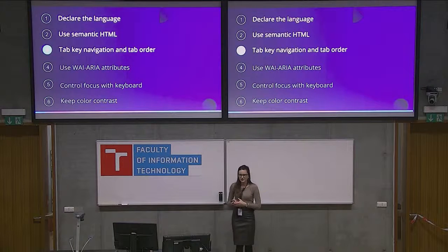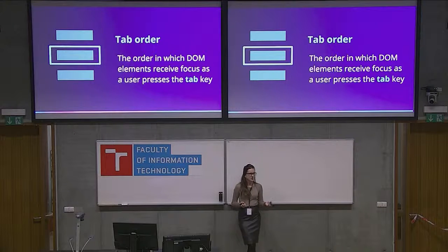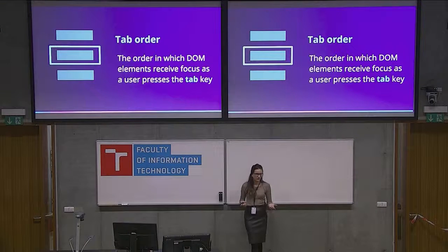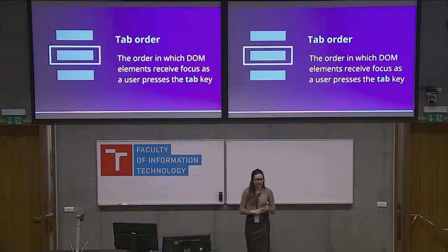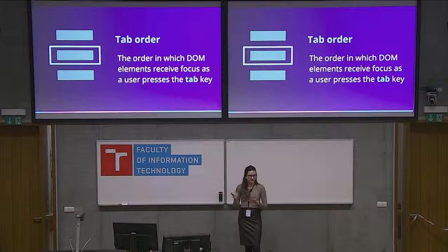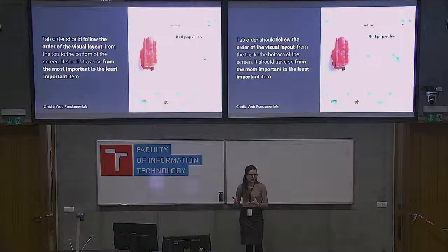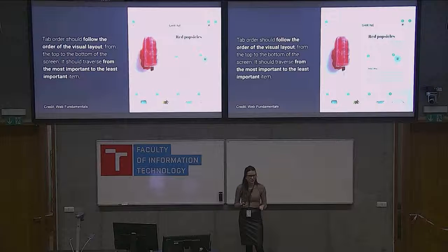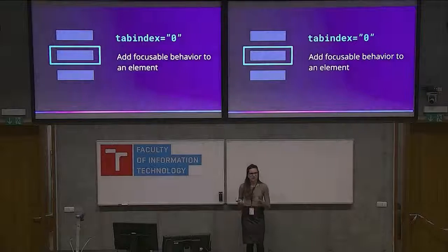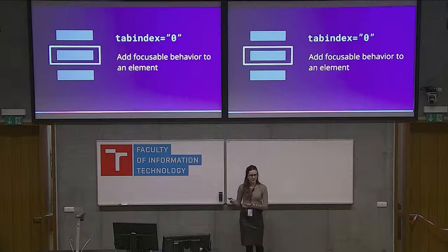Tab key navigation and tab order: the order in which elements get focused when you press Tab is called the tab order. When you have a form and fill inputs and press Tab, focus goes in the correct order. Elements like inputs, buttons, and links are implicitly in the tab order and can receive focus. But if you build some interactive element like a combo box using a div, keyboard users should still be able to reach it. You can add 'tabindex=0' to explicitly make an element focusable so users can interact with it without a mouse.